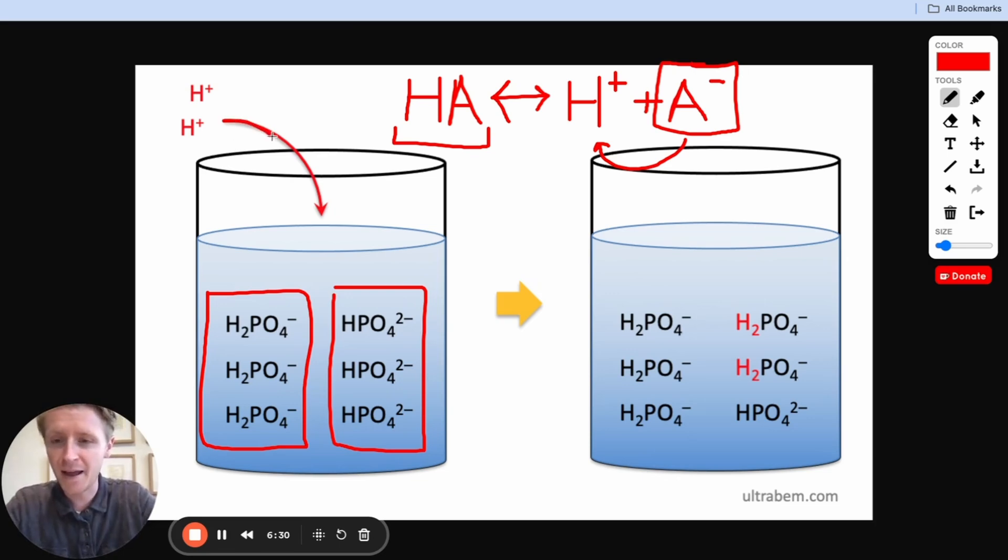Now look, if I add H+ into the solution, let's say I'm adding a strong acid, and all of a sudden there's a bunch more protons in the solution that might change the pH. These conjugate bases right here are totally comfortable picking up those H's and becoming weak acids. They're totally comfortable picking up those extra H's and moving in this direction, in this equation.